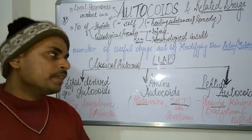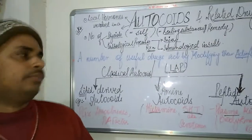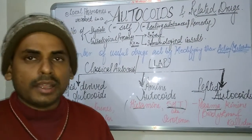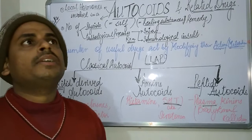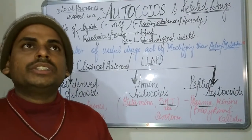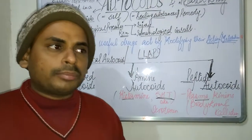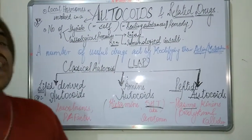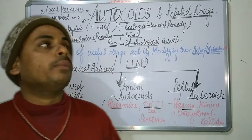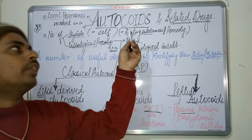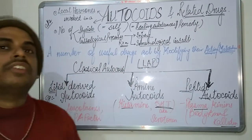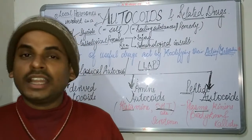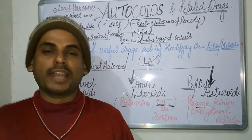In addition to these, there are a variety of other autocoids, for example vasoactive intestinal peptide, serotonin, and histamine. This was my short trick to easily remember what autocoids are and the classification of classical autocoids. If you like my video, don't forget to subscribe to my channel and press the bell icon to stay updated.